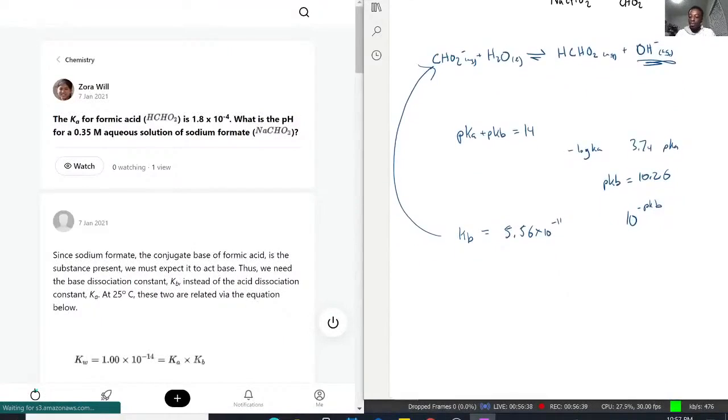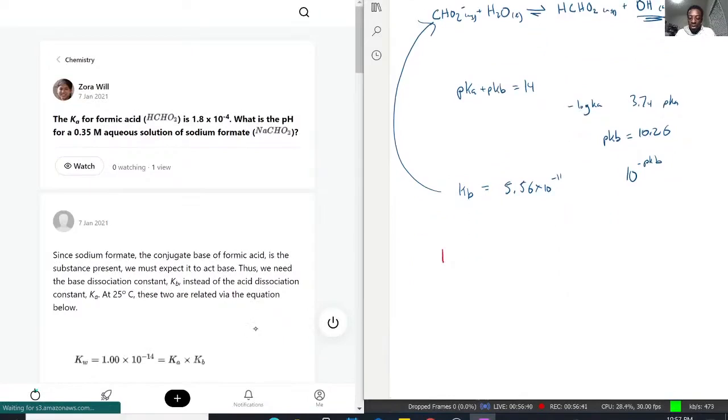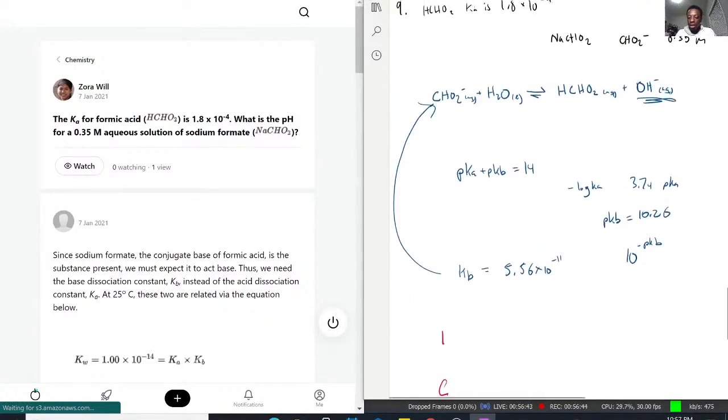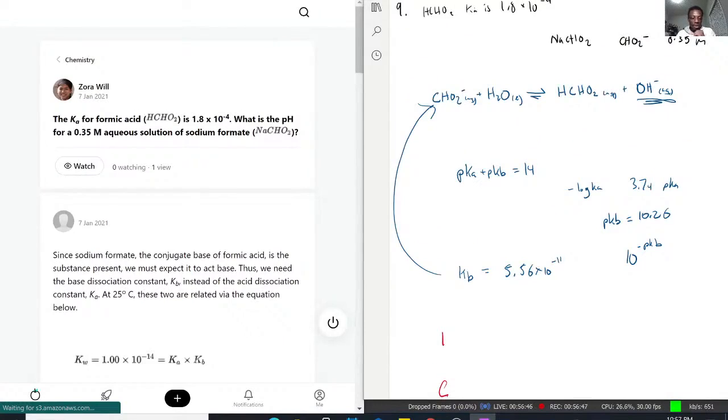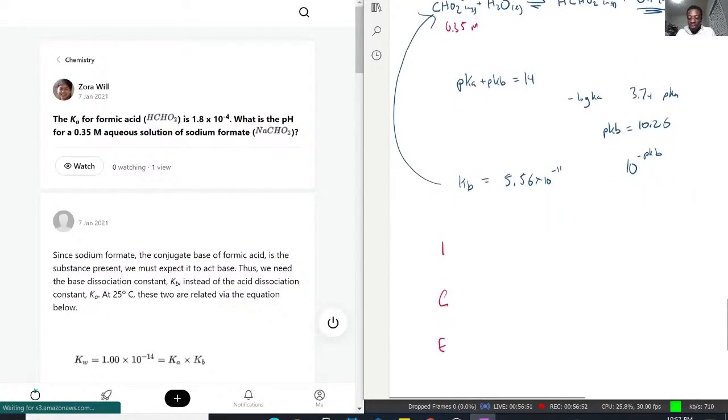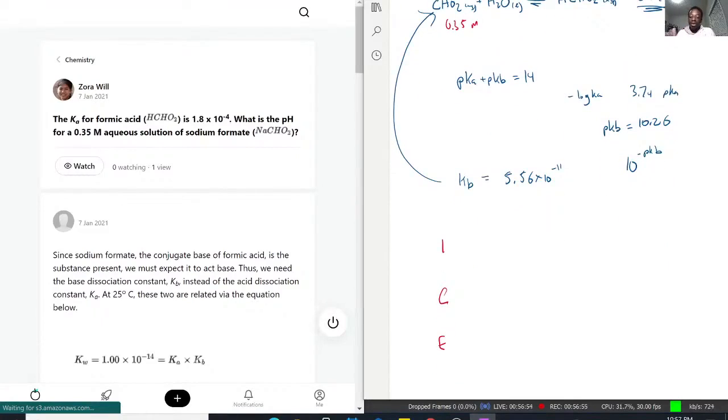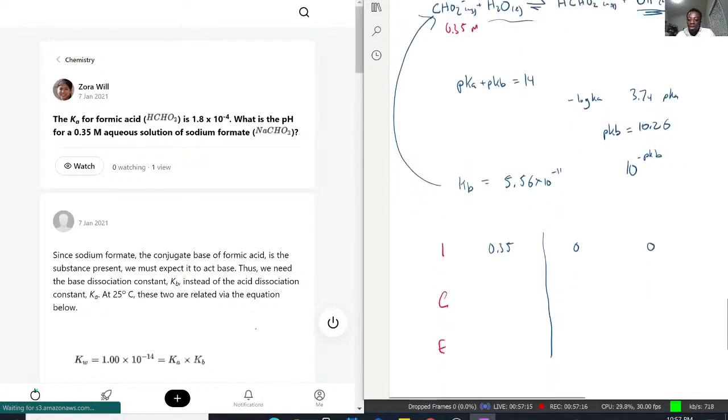Now that we've done that, we need to set up an ice table. Initial, change, equilibrium. So with that being said, we started with 0.35 moles. That's quite a big amount compared to the Kb. Initial is 0.35, and we're assuming we start with zero for the other parts. We don't include water because water is the solvent. We don't include water in there. But we do have one for the HCHO2 and the OH minus.